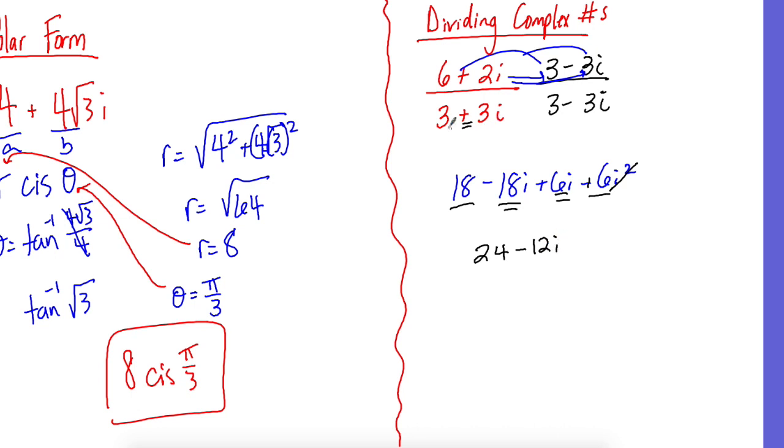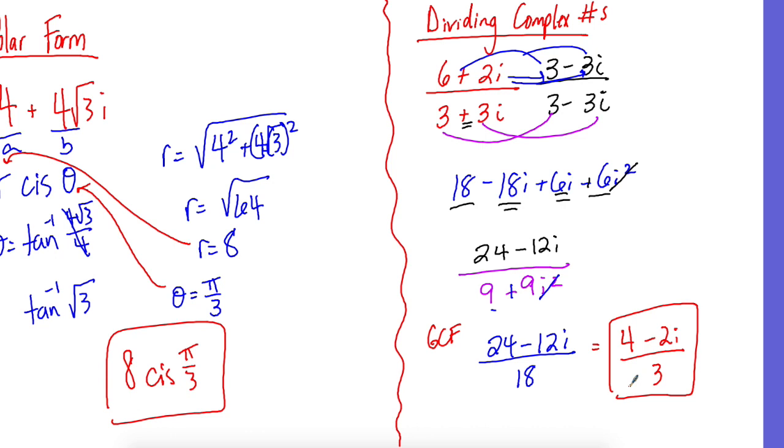And positive 6 is negative 12i. On bottom, you multiply the first and the first, the last and the last, so that is 9 minus 9i squared. I squared changes the sign, so that's 24 minus 12i, 9 plus 9 is 18. Simplify, which means find a GCF of everything. The GCF of 24, 12, and 18 is 6. 24 divided by 6 is 4, 12 divided by 6 is 2, 18 divided by 6 is 3, and that is your final answer.